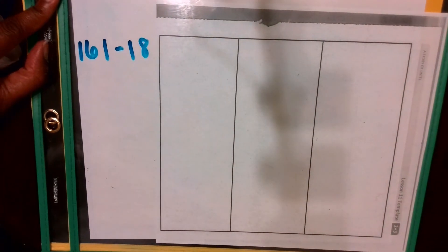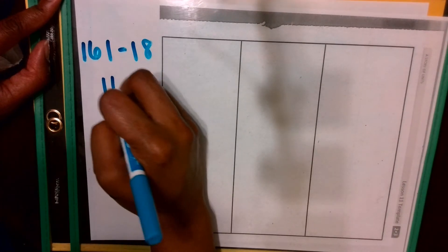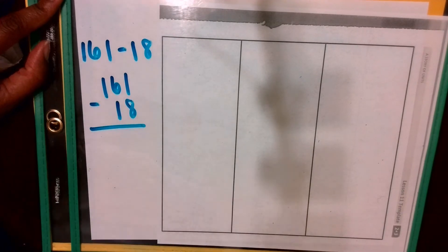Alright, now that we have our materials and our place value chart already drawn out, let's go ahead and get started. 161 minus 18. I'm going to rewrite this in vertical form. 161 minus 18.